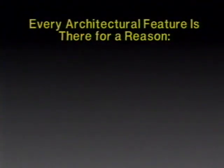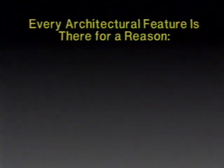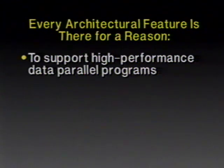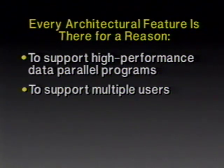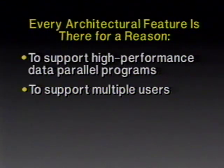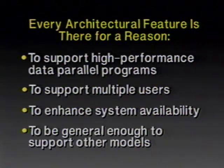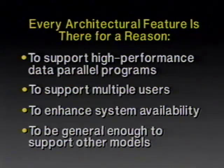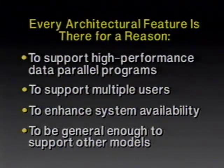So I want to say about the CM5 that every architectural feature is there for some reason. As complicated as it is, every one of those hardware techniques is there for one of four reasons: to support high-performance data parallel programs; because continuity from the CM2 is very important; to support multiple users through time-sharing and space-sharing; to enhance system availability; or to be general enough to support other parallel programming models. Because while the data parallel model looks very attractive, it's not necessarily the end-all and be-all, and we want to leave lots of room for experimentation.